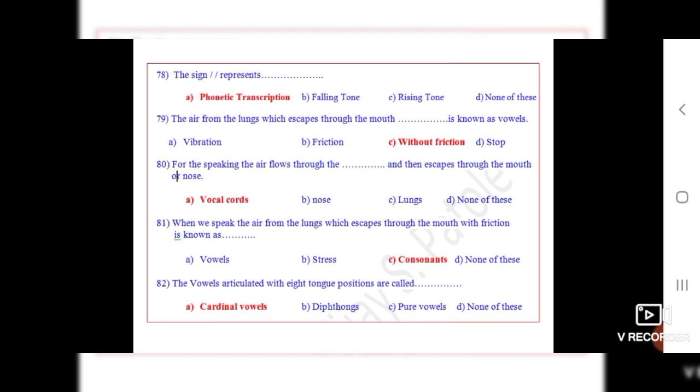Question 79: The air from the lungs which escapes through the mouth dot dot is known as vowels. The correct option is C, without friction.